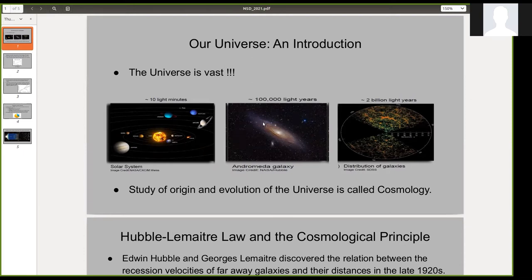And in order to map the distribution of galaxies in the universe, there have been several sky surveys. One such survey is the SDSS which looks as far as 2 billion light years. And if you look at the map where every point is a galaxy, that gives you an idea of the size of the universe.